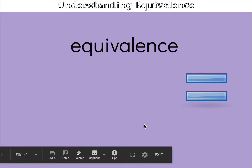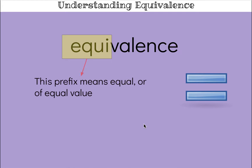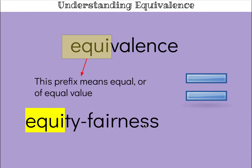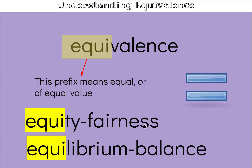If you look at the first half of this word we see 'equi,' and that prefix simply means equal or equal value. Some words that have the same prefix would be 'equity,' which means fairness, and then the word 'equilibrium,' which means balance. Hard words, but when the prefix is 'equi' it means equal or fair value.